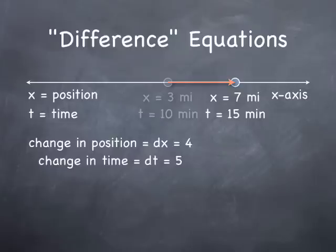The change in time, dt, or the difference in t, is 5 minutes. dx/dt is 4 fifths. Don't forget that this actually stands for something. It literally means that we are traveling 4 miles per 5 minutes. It's a speed.